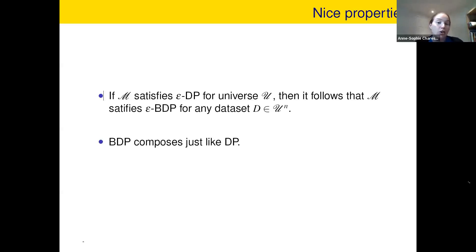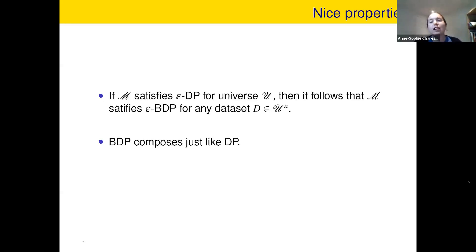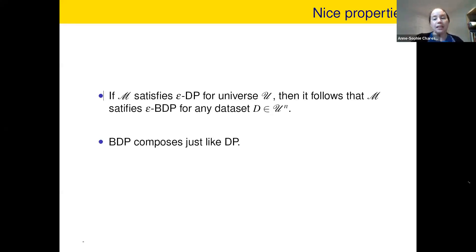There are still some nice properties though. If you have a mechanism that is differentially private for some universe and you have a data set that's part of that universe, then your mechanism will satisfy bootstrap differential privacy. So it's truly a relaxation of differential privacy. Also, bootstrap differential privacy composes just like differential privacy — the composition theorems follow nicely. So it allows you to do all sorts of more complicated mechanisms if you'd like from the simple ones.